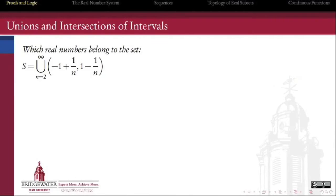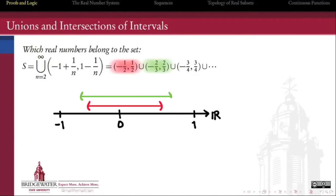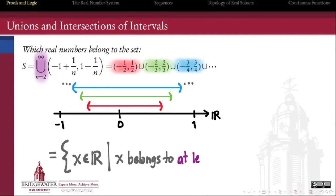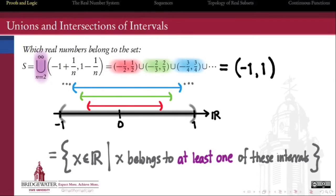To understand a set written as an infinite union of intervals, try starting by diagramming the intervals and then using your words. Remember that a union of sets contains elements that belong to at least one of the sets. And so this set consists of all the real numbers belonging to at least one of these open intervals. This often helps you to find a simpler expression for the set.